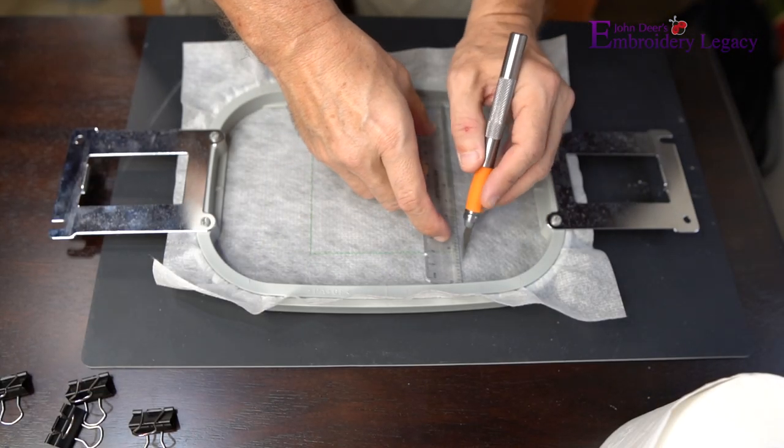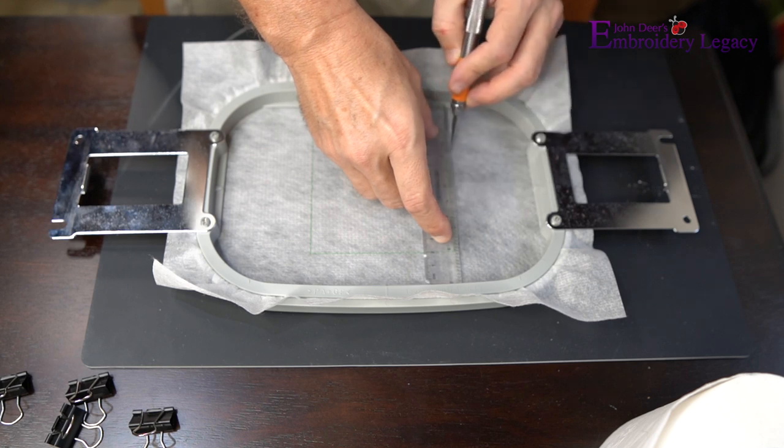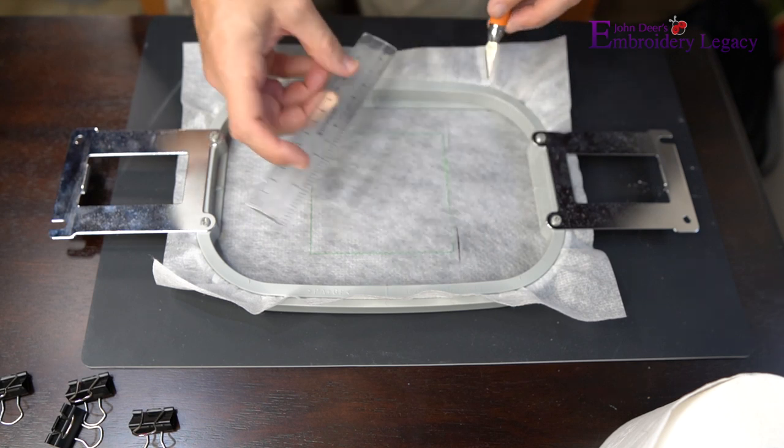Now that the placement stitch is done, we are going to take our exacto knife and create four little slits along the placement stitch where we will be inserting our custom clips.